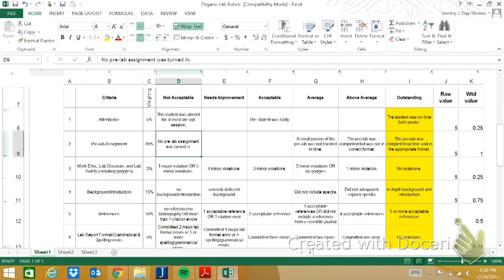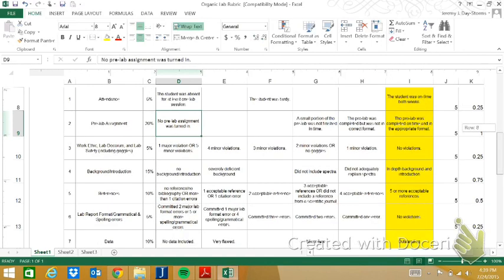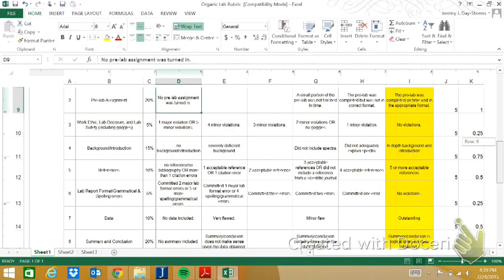Attendance is 5%, turning in the pre-lab is 20%. You have your work ethic, lab decorum, lab safety, including providing your own lab goggles. They have to be appropriate lab eye protection. They cannot be skiing goggles, which I've had people try to wear in the past, and they cannot be sunglasses. There are different parts to the lab report. Some parts are required for the pre-lab, and then all the parts are required for the final lab report.